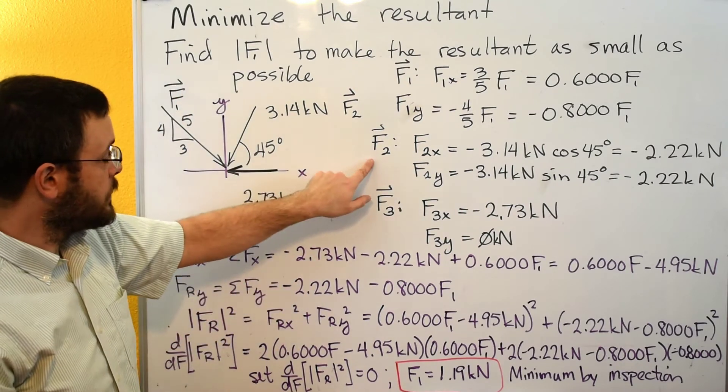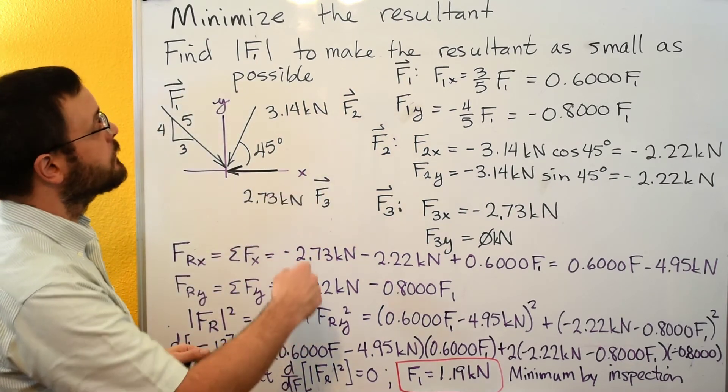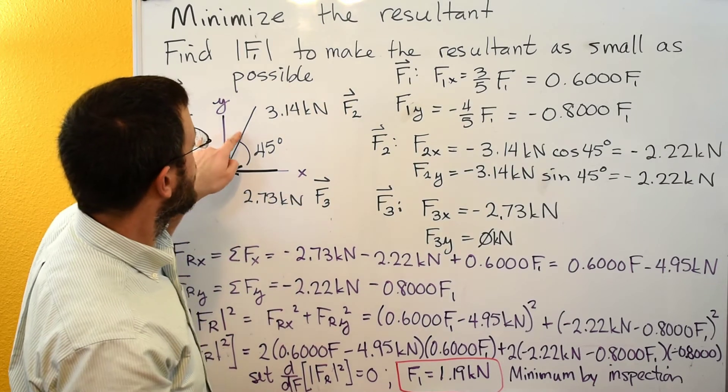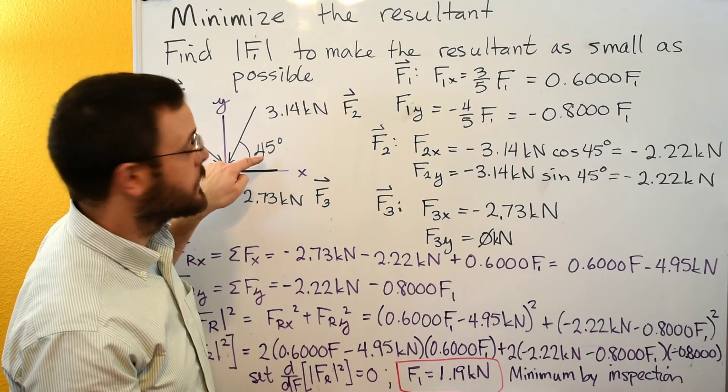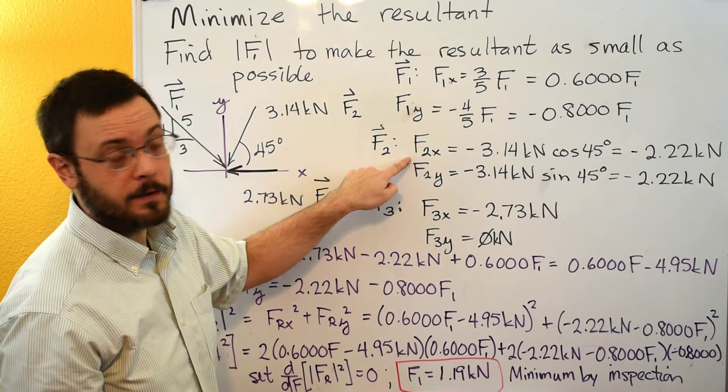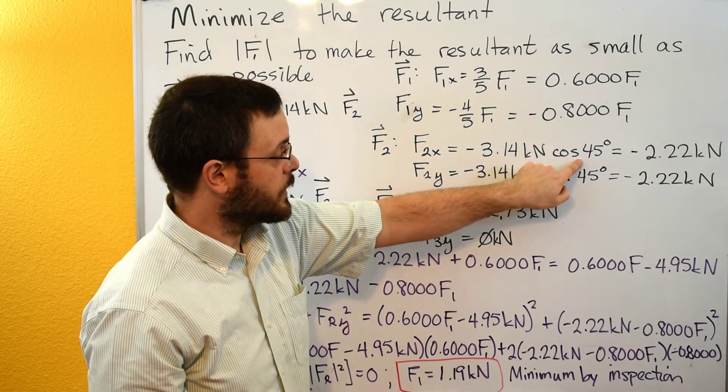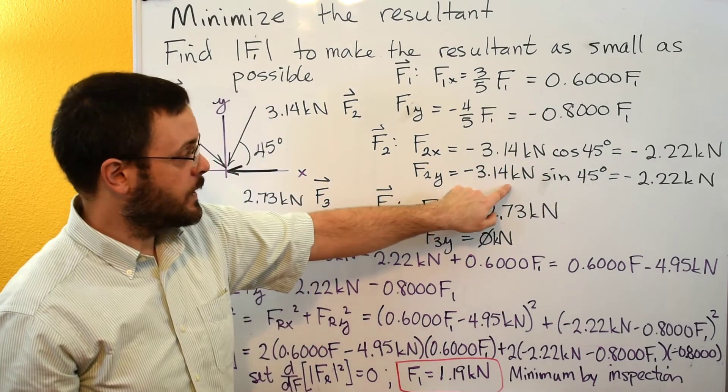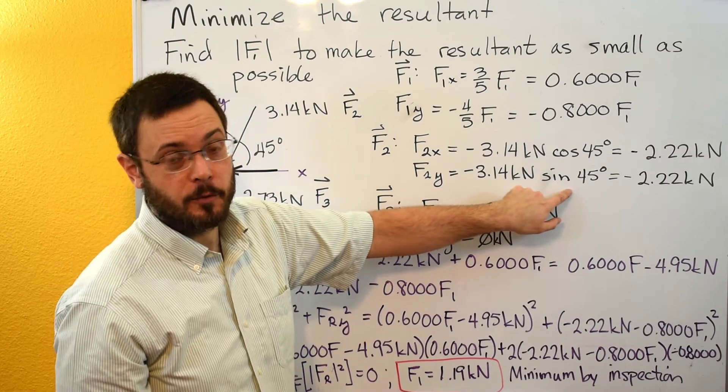For F2, this vector is having a 45 degree angle to the X axis. So F2X is going to be its magnitude times cosine of 45. F2Y is its magnitude times sine of 45.